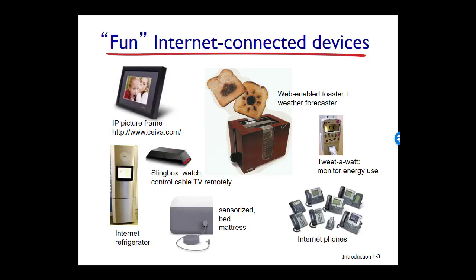Today, almost anything may be connected to the Internet. Here are just a few examples: a picture frame, a web-enabled toaster, various Internet telephones, sensors of all sorts, an Internet refrigerator, cable control devices. Your lights and lamps can all be connected to the Internet. And now you often see on television commercials for security devices where people are able to watch their house remotely.